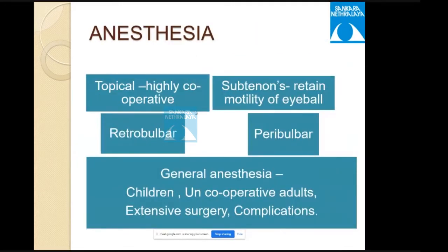Regarding anesthesia: squint surgery is usually done under general anesthesia for children, cooperative adults in extensive surgery, and in complicated cases. Under topical anesthesia, it can be done in a highly cooperative patient. Sub-Tenon's anesthesia can also be used — its advantage is that eyeball motility is retained, allowing squint correction to be checked on the table itself.